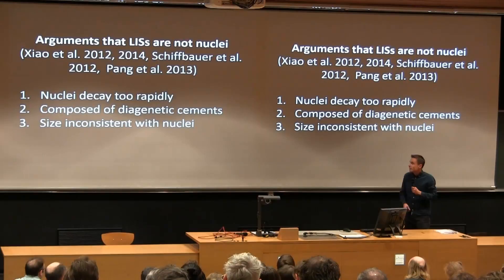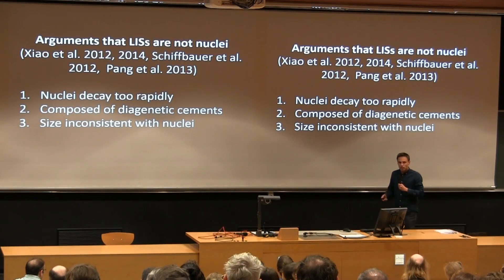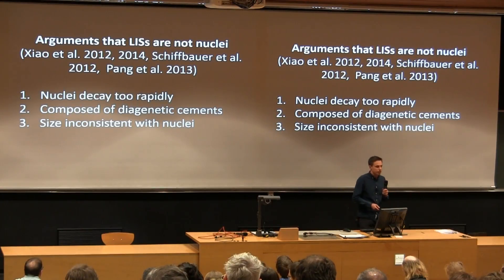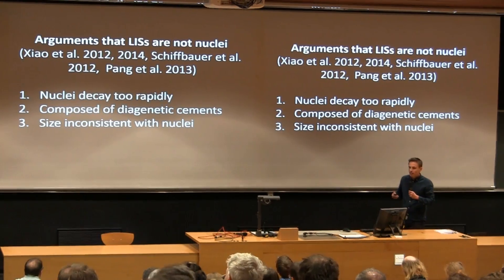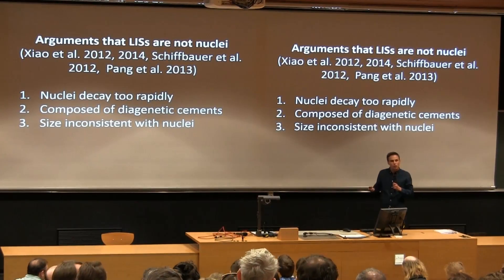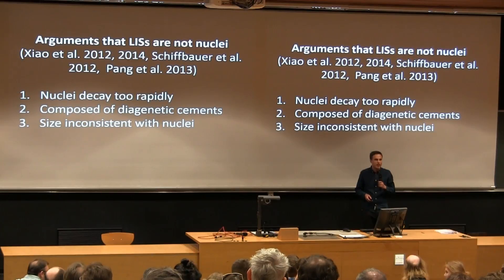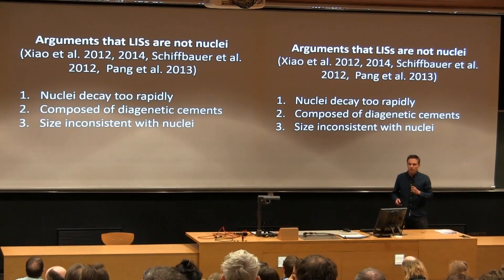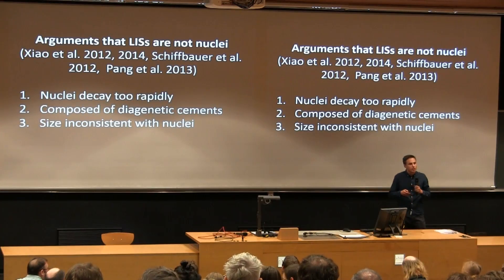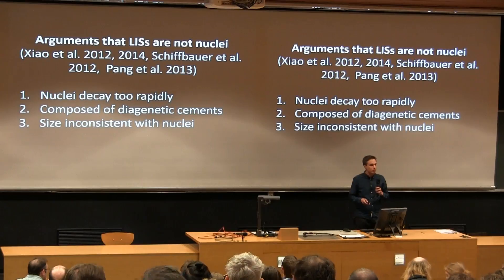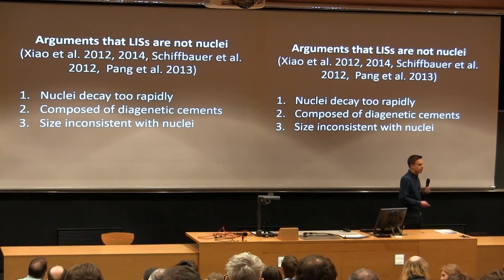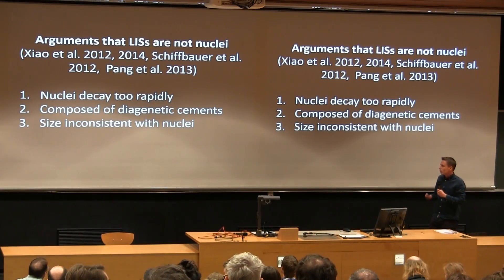However, there have been a series of papers arguing that these structures are not in fact nuclei, and three main arguments have been used. Firstly, that nuclei have an extremely limited preservation potential, so we might not expect to see them in the fossil record. Secondly, that the structures are composed of diagenetic cements and so can't preserve the morphology of labile anatomy like nuclei. And finally, that the size of these structures is incompatible with this interpretation.